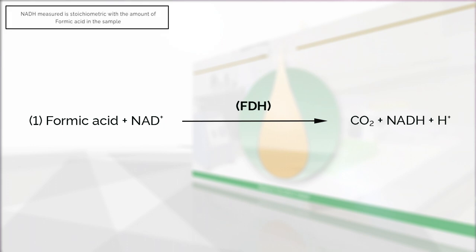The amount of NADH formed is stoichiometric with the amount of formic acid in the sample. It is the NADH formation which is measured by the increase in absorbance at 340 nm.